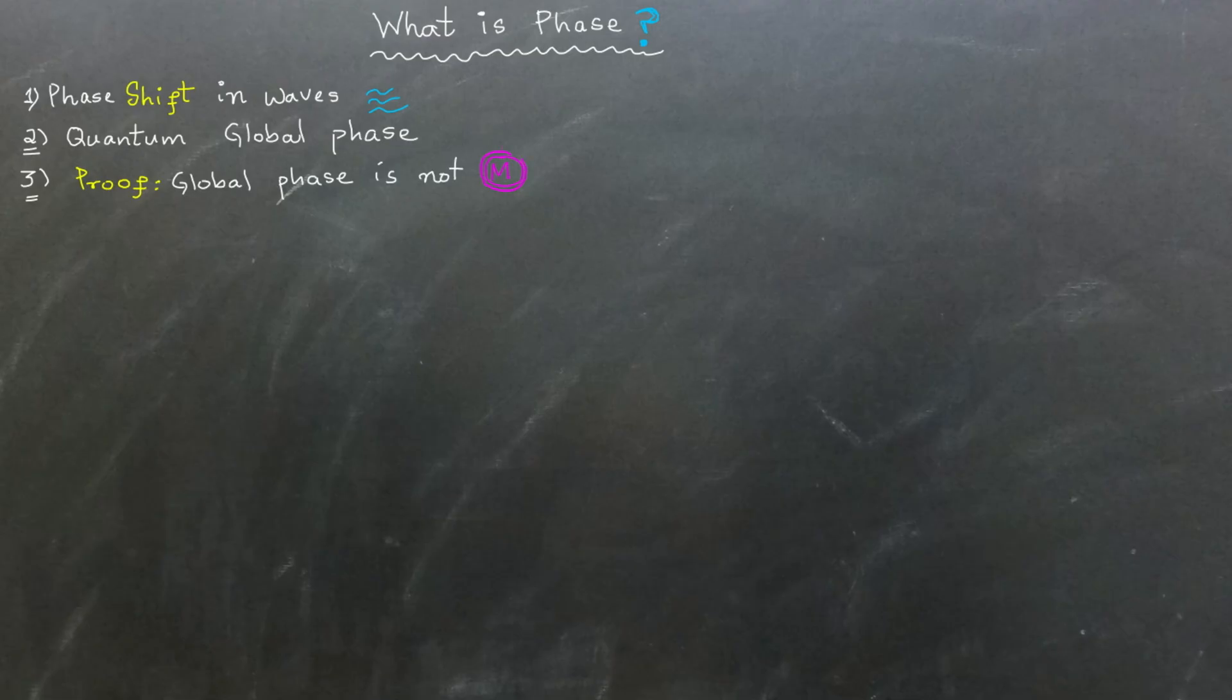Then, I will introduce the concept of relative phase. Finally, I will show that two quantum states that differ only by a relative phase can still be distinguishable when measured. Let's start.